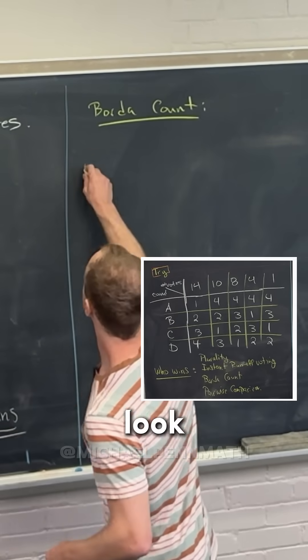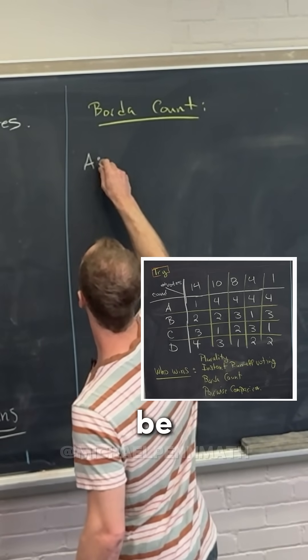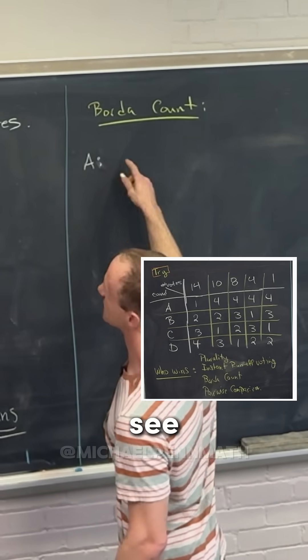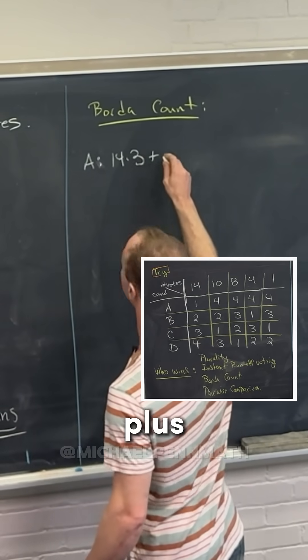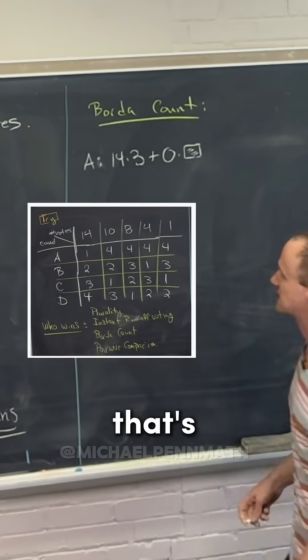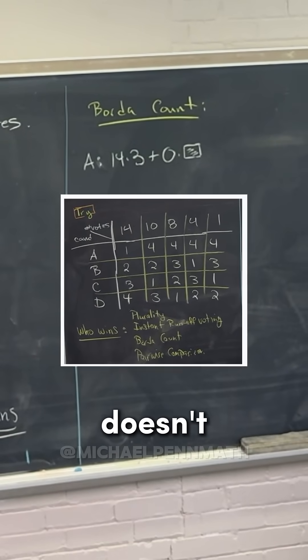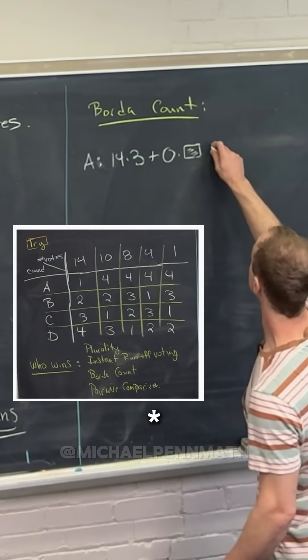Okay, so let's look at how many points A has. Maybe that shouldn't be an equals, it should be like maybe a colon or something. So let's see. We're going to have 14 times three plus zero times—I'll just put a box here. That's for everything else, right? Yeah, we might as well not even worry about that because A doesn't achieve any points. So let's see, 14 times three is 42.